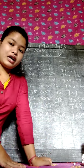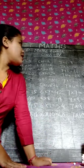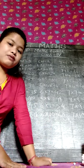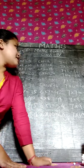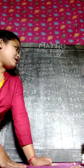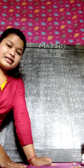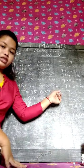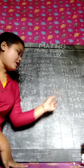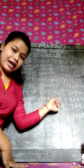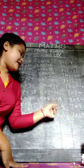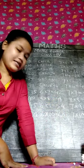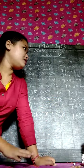6 ones are 6, 6 twos are 12, 6 threes are 18, 6 fours are 24, 6 fives are 30, 6 sixes are 36, 6 sevens are 42, 6 eights are 48, 6 nines are 54, 6 tens are 60.